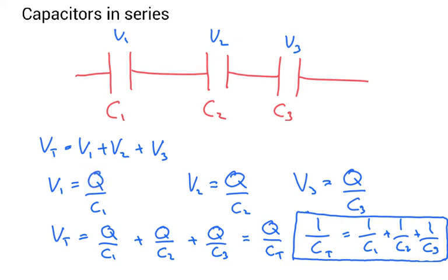Now V1 is going to equal the charge divided by C1. V2, the voltage across here, is going to equal the charge divided by C2. And V3 is going to equal the charge divided by C3.